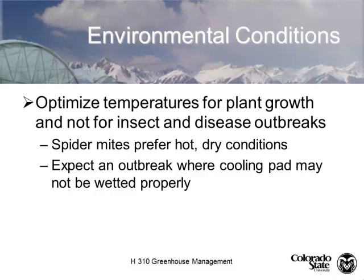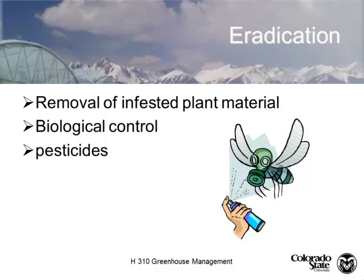The next part is environmental control. We want to maintain our greenhouses at an optimum condition for growing our plants. Sometimes that optimum condition is also optimum for an insect, but oftentimes not. Spider mites — which I know are not insects — have optimal conditions of hot and dry, not cool and moist. So if you're letting your greenhouse get too hot, you may set yourself up for a spider mite outbreak. Look for inadequate cooling as something to address for optimum conditions.